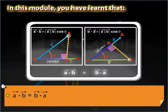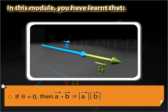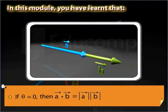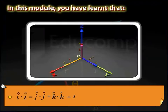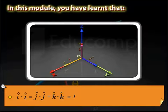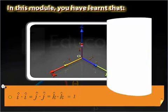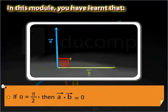The dot product of vectors is commutative. The dot product of two vectors is the product of their magnitudes when theta is equal to 0. The dot product of unit vectors — I-cap with itself, J-cap with itself, and K-cap with itself — is equal to 1. The dot product of two vectors is equal to 0 when theta is equal to pi by 2.